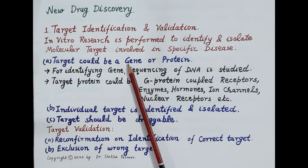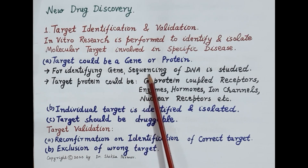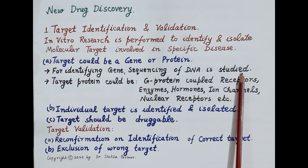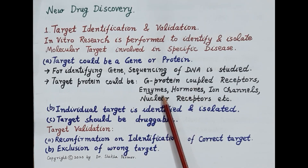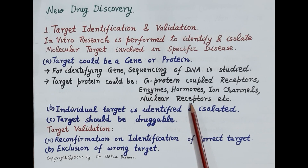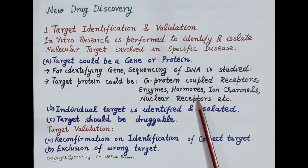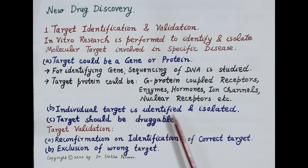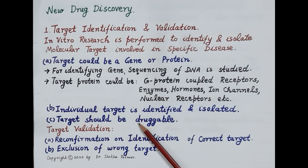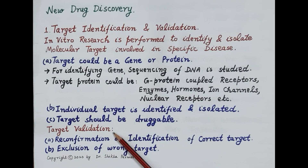Defects in a gene are involved in many diseases, so for identifying a gene as a target, sequencing of DNA is studied. Target proteins could be G protein-coupled receptors, enzymes, hormones, ion channels, nuclear receptors, etc. All these proteins are members of the signal transduction pathway. During this step, an individual target is identified and isolated. Importantly, the target should be druggable — meaning its activity can be modified by a new drug molecule.